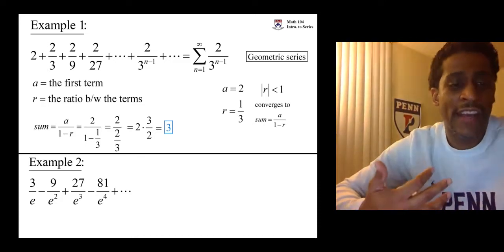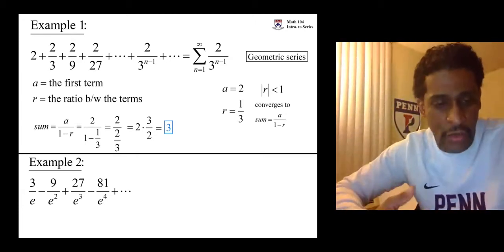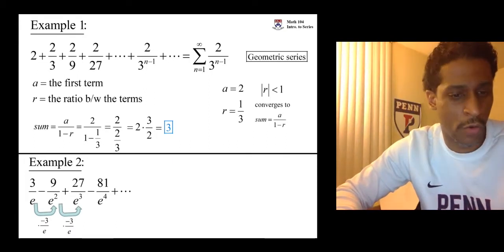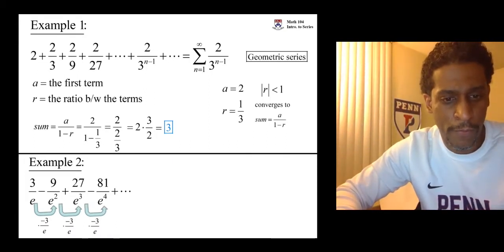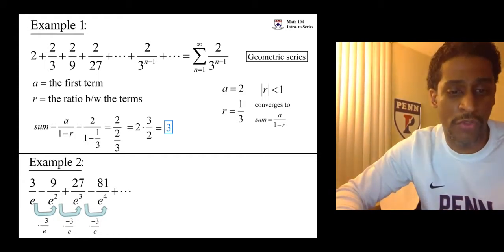Check it with the next one. How do you get from negative 9 over e squared to 27 over e cubed? What do you multiply by? Negative 3 over e. And so, common ratio, negative 3 over e.